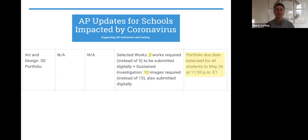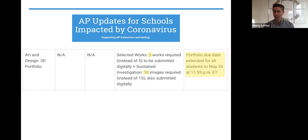College Board has tried to make this much more accessible for students, knowing that we aren't working from schools in a lot of cases now. We don't have that same amount of time, space, or materials, so they've extended the due date for AP upload to May 26. Additionally, the Selected Works section is now three works — three works but six photographs, so two images for each work you're submitting. And your sustained investigation is now 10 images instead of 15. Everything in all of the portfolios will be submitted digitally this year.